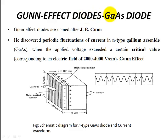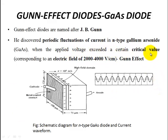Next is the Gunn effect diode, also called the gallium arsenide diode. It is named after the scientist J.P. Gunn. The Gunn effect diode is a transferred electron device — it is a bulk semiconductor device. What Gunn observed is that electrons exhibited a period of oscillation, meaning oscillations were visible — this is the Gunn effect.